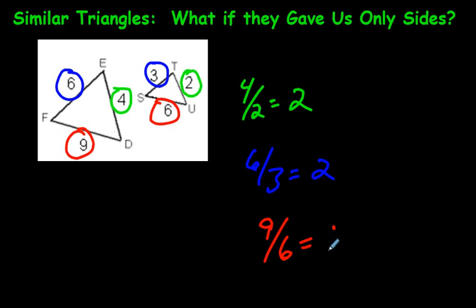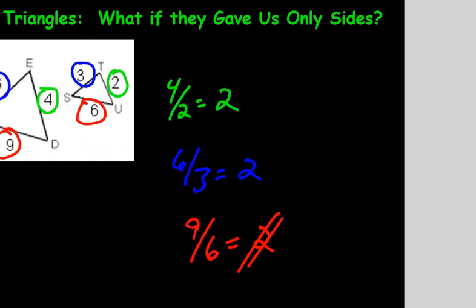This isn't looking good here though, folks. 9 divided by 6 is not equal to 2. As soon as something is not equal to 2, we know that these two triangles are not similar, and so therefore, we can say these two triangles are not similar. So we would just put a symbol like this between them.